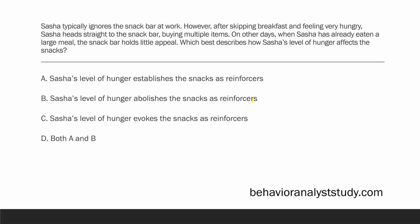Sasha typically ignores the snack bar at work. However, after skipping breakfast and feeling very hungry, Sasha heads straight to the snack bar buying multiple items. On other days, when Sasha has already eaten a large meal, the snack bar holds little appeal. Which best describes how Sasha's level of hunger affects the snacks? We can see this is a motivating operation question. When Sasha is hungry, her behavior changes — she goes to the snack bar. When she's not hungry, she doesn't go and the snacks aren't appealing.